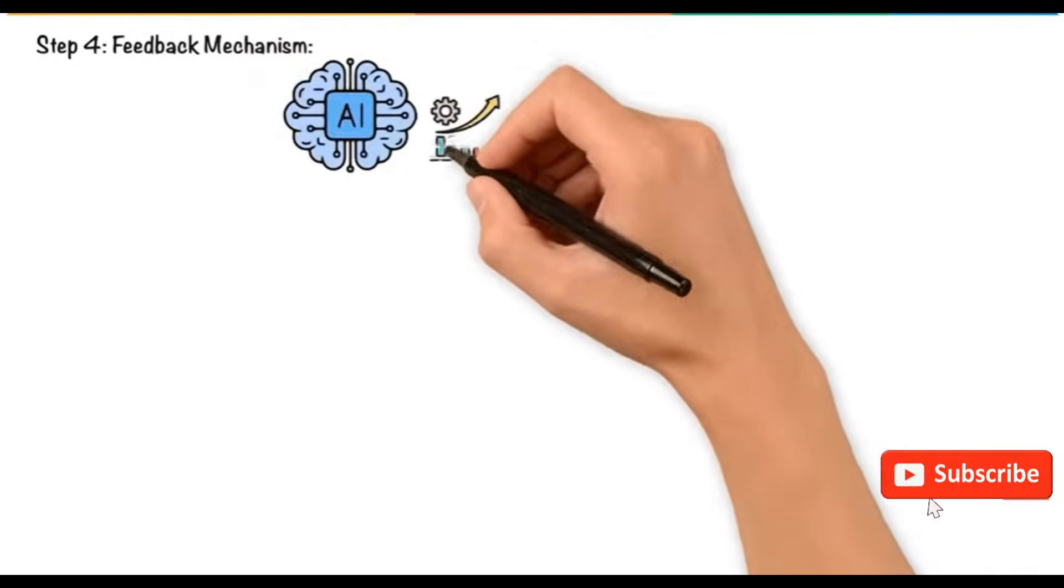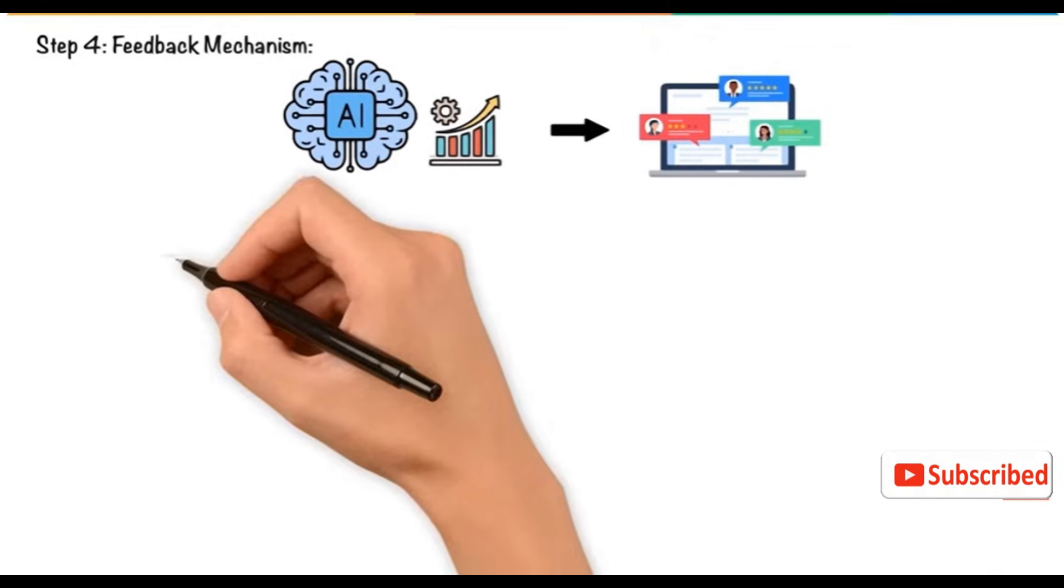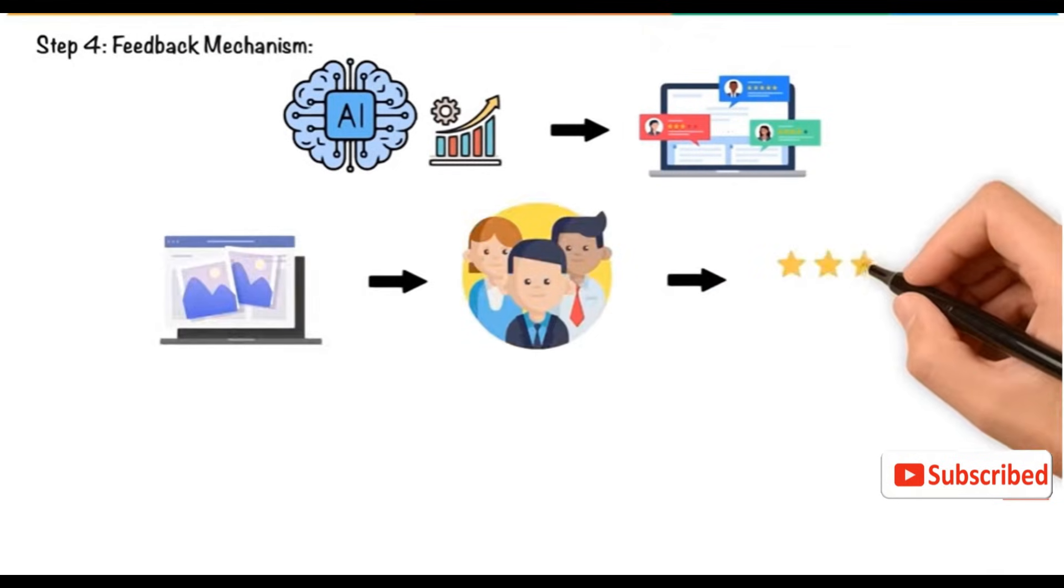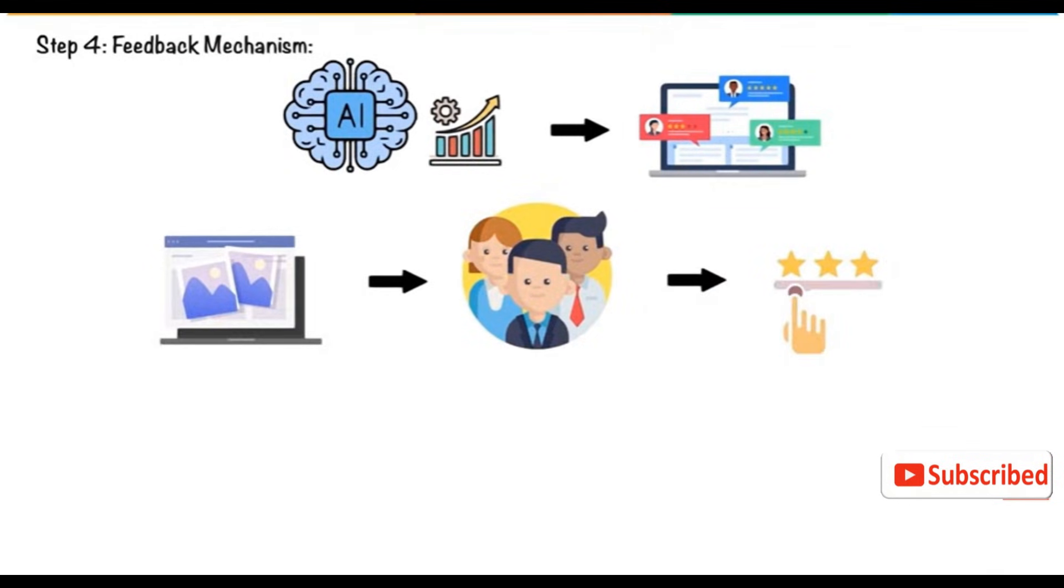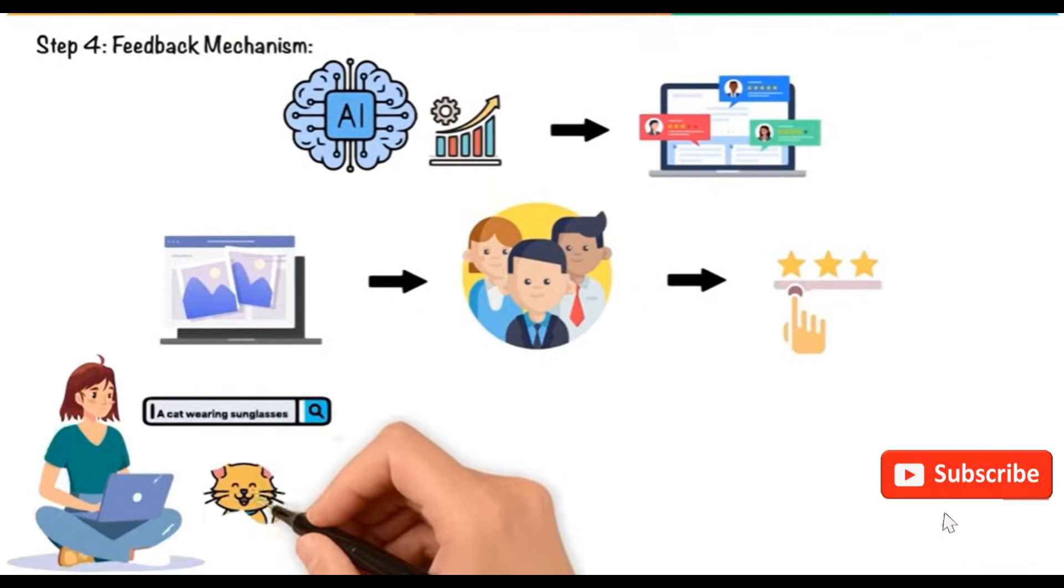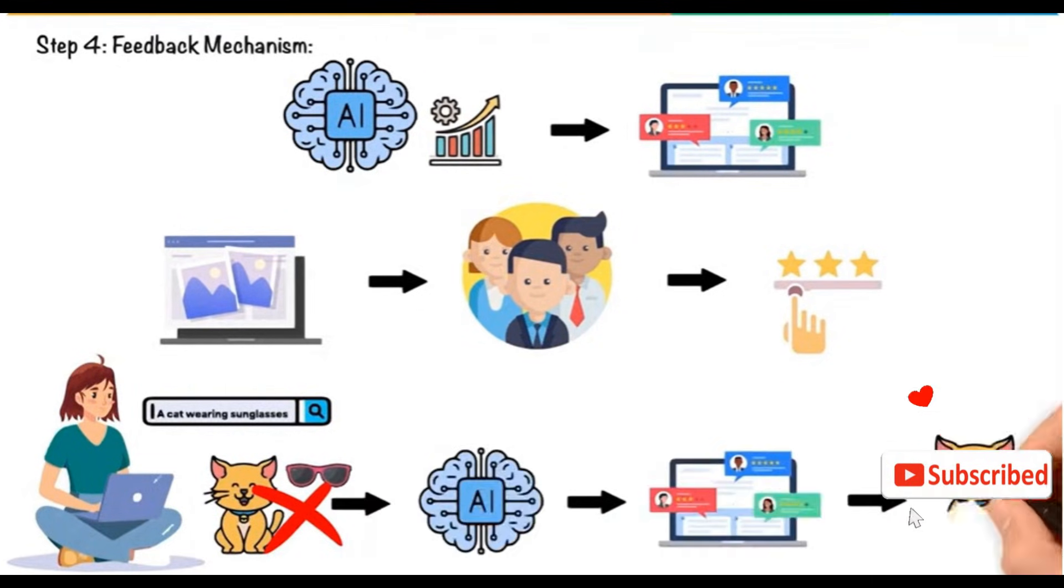Feedback Mechanism: Generative AI models improve through feedback. After generating an image, users provide feedback on the accuracy or quality of the output. If Tina's generated image shows the sunglasses floating beside the cat, she can mark it as incorrect. The model uses this feedback to improve future image generations.